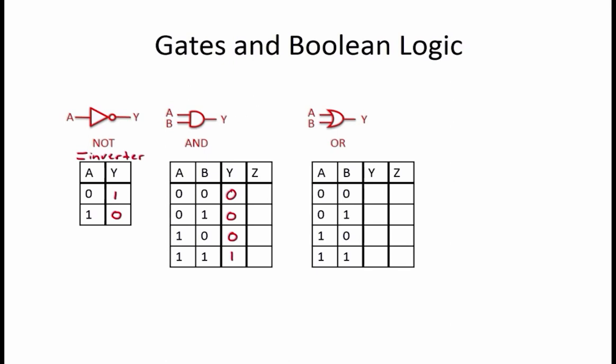The OR function just expects at least one of its inputs to be true in order to produce a 1 as its output. So for AB equals 0, 0, Y equals 0. But for the other three combinations, Y equals 1.